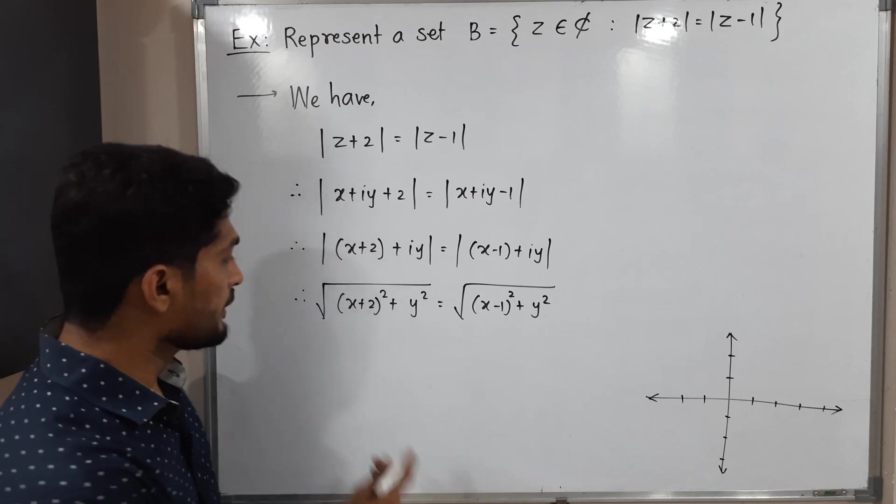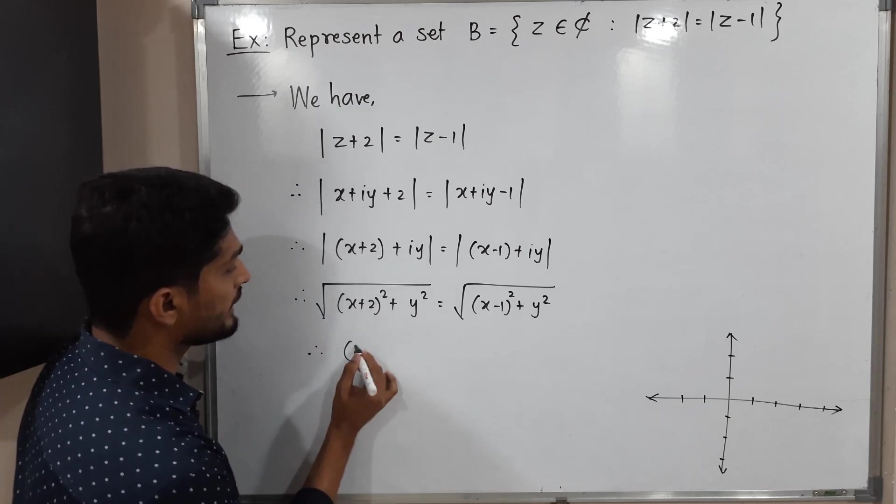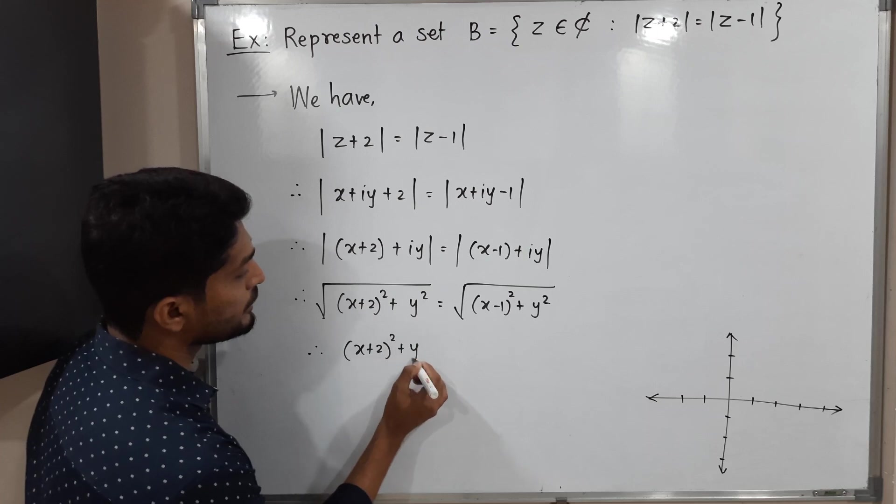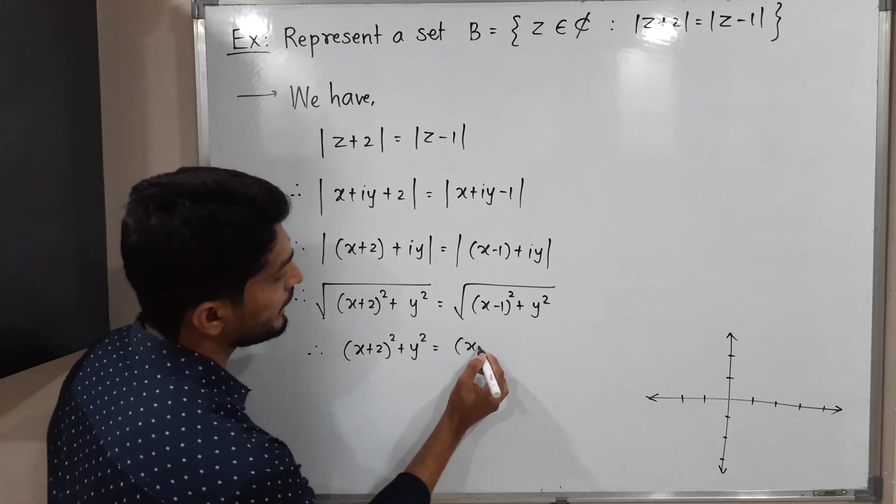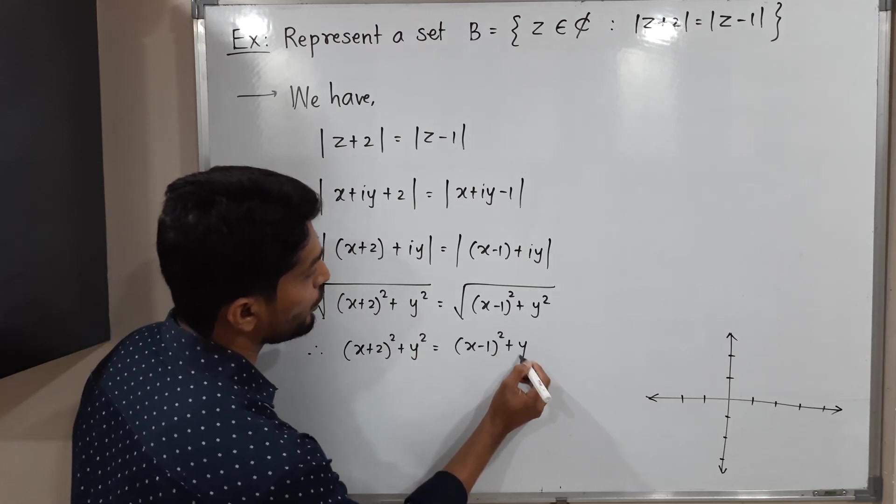I will take square of both sides. If you take square of both sides we will have simply x plus 2 square plus y square and here x minus 1 square plus y square right.